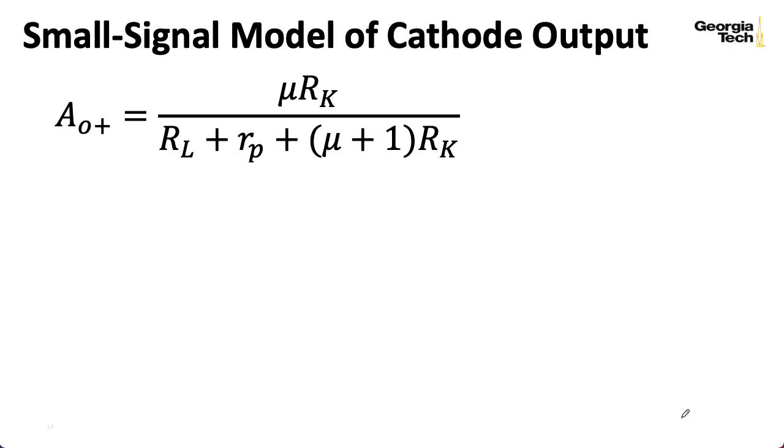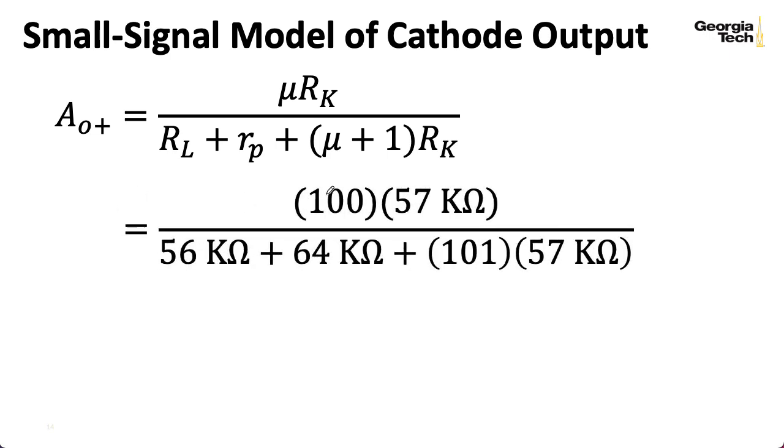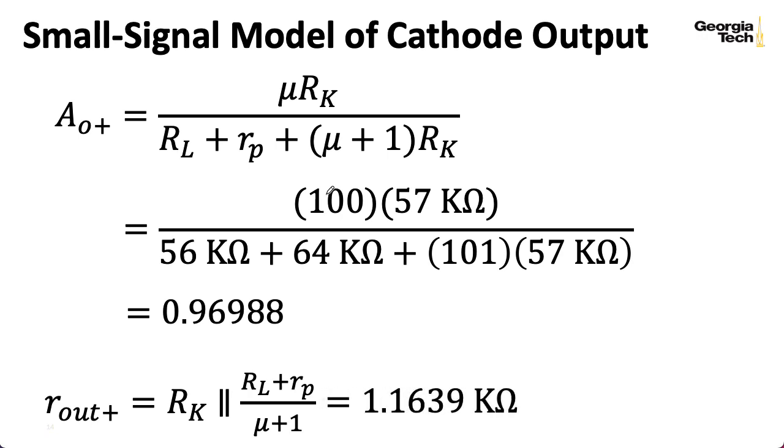So the small signal gain for the output at the cathode is this expression. And plugging in all of our various values, I wind up with 0.96988. I guess you could call that 0.97. I'm being a little absurd with these significant digits here. Anyway, something close to 1, but not quite 1. And now if we were to look at the output impedance and plug in the values for that expression, I wind up with 1.16 something 1.15 kiloohm. So this isn't quite as small as the super small output resistance we got from the cathode follower. And that arises from the fact that we do now have an RL on the other side. But it's still pretty small. This is pretty good.